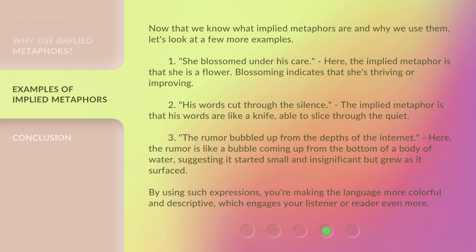Now that we know what implied metaphors are and why we use them, let's look at a few more examples. First: 'She blossomed under his care.' Here, the implied metaphor is that she is a flower — blossoming indicates that she's thriving or improving. Second: 'His words cut through the silence.' The implied metaphor is that his words are like a knife, able to slice through the quiet.